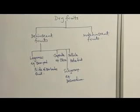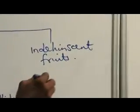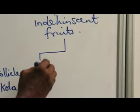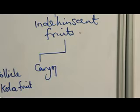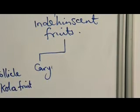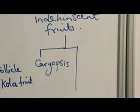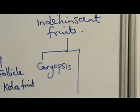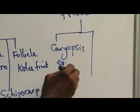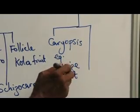We now move on to the Eastern fruit, the one that does not split. This can be classified into Caryopsis. Caryopsis is when the fruit is dry and the pericarp and the seed coat fuse together. An example is maize — the maize grain we are eating is actually a fruit, not a seed. It is a Caryopsis.